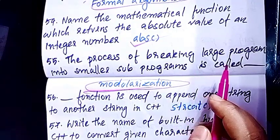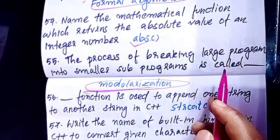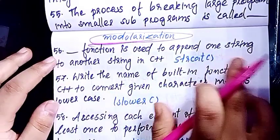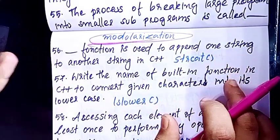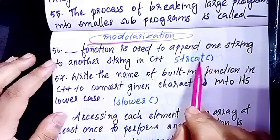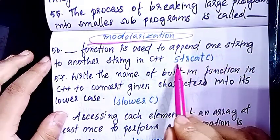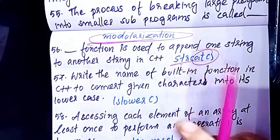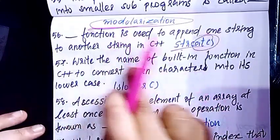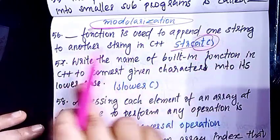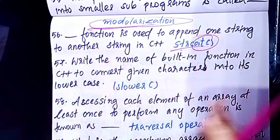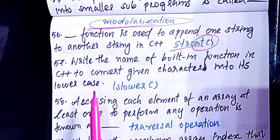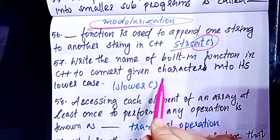The mathematical function which returns the absolute value of an integer number is abs(). The process of breaking large programs into small subprograms is called modularization — that is modular programming. The function used to append one string to another string in C++ is strcat().